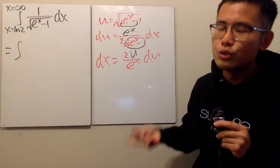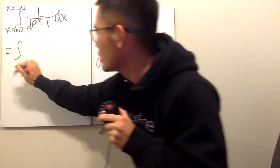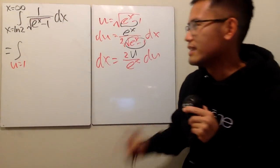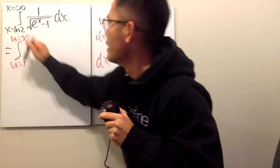But don't forget to take the numbers to the u as well. When x is ln 2 right here, e to the ln 2 is 2, 2 minus 1 is 1, square root of 1 is 1. So here we have u is equal to 1. And then we put infinity right here. e to the infinity is infinity, minus 1 is still infinity, square root of infinity is still infinity.